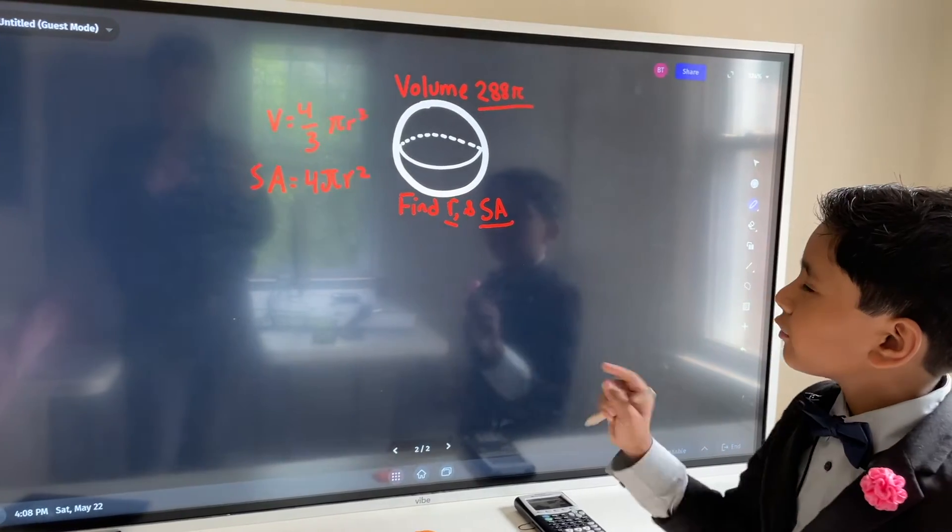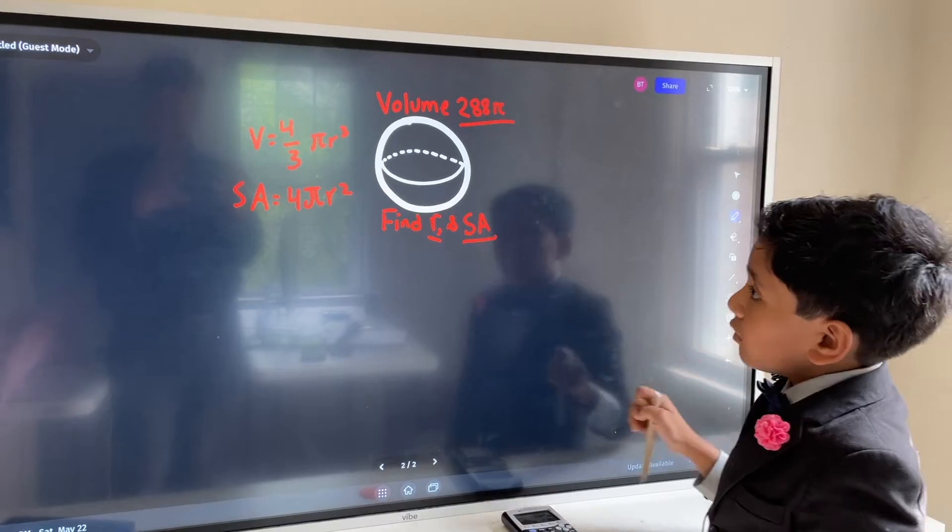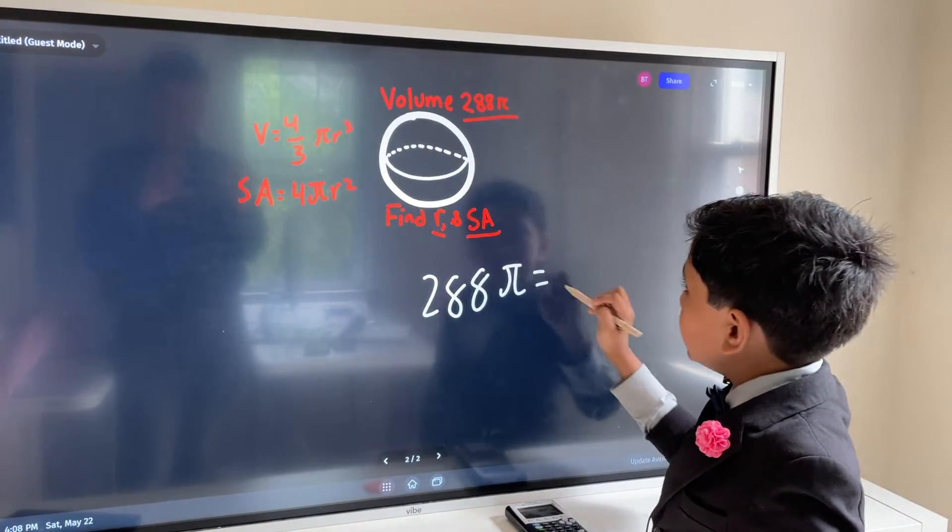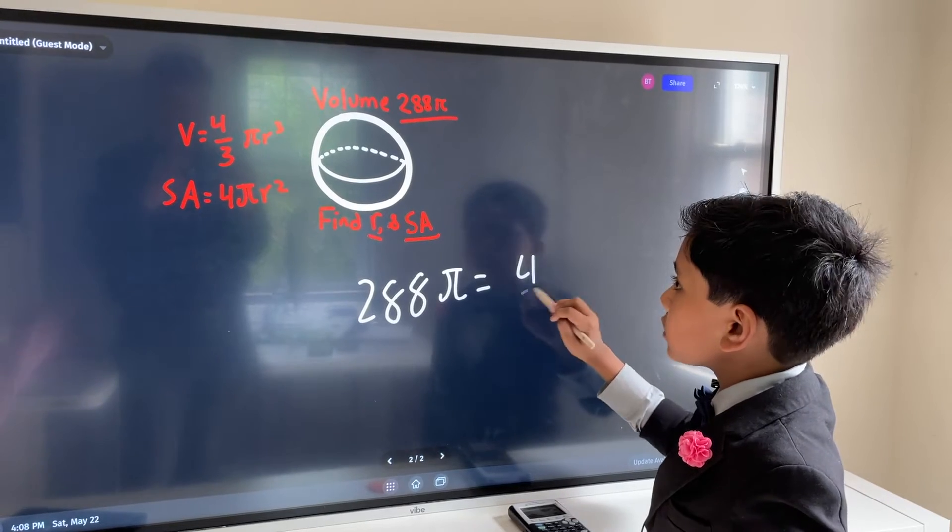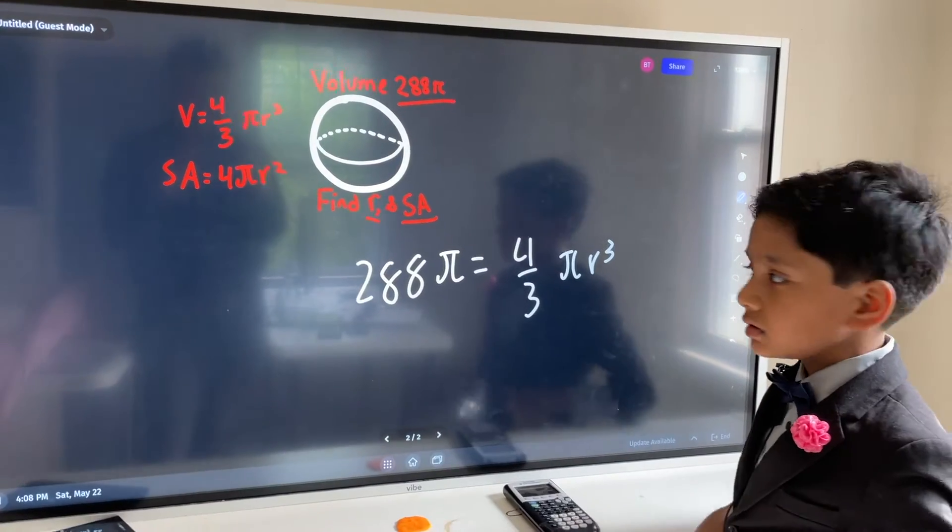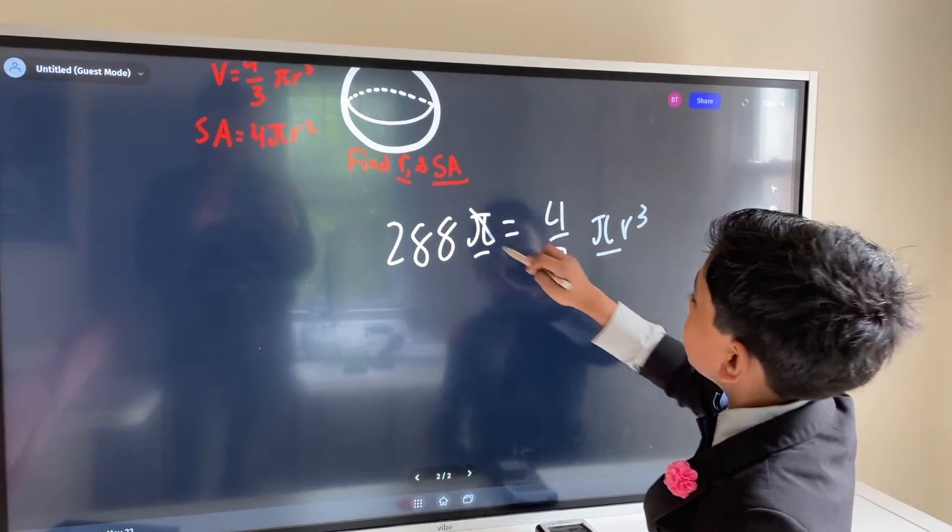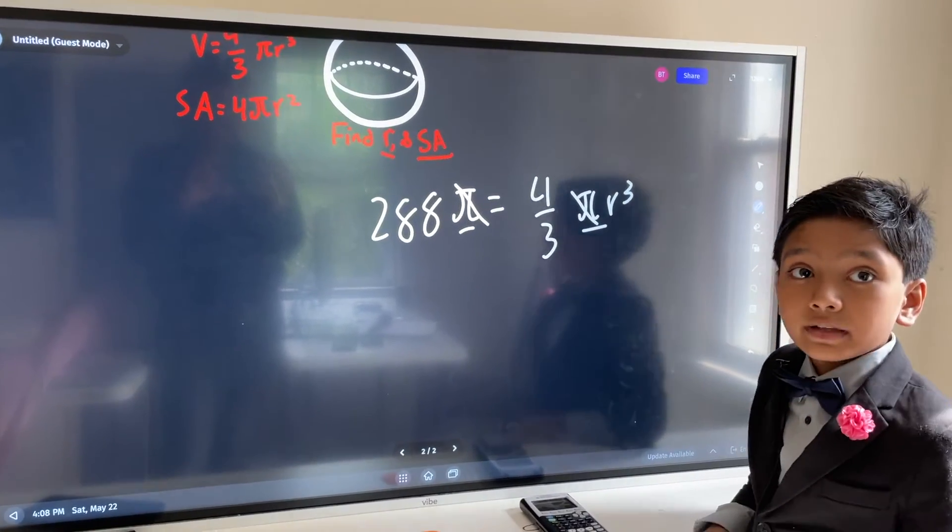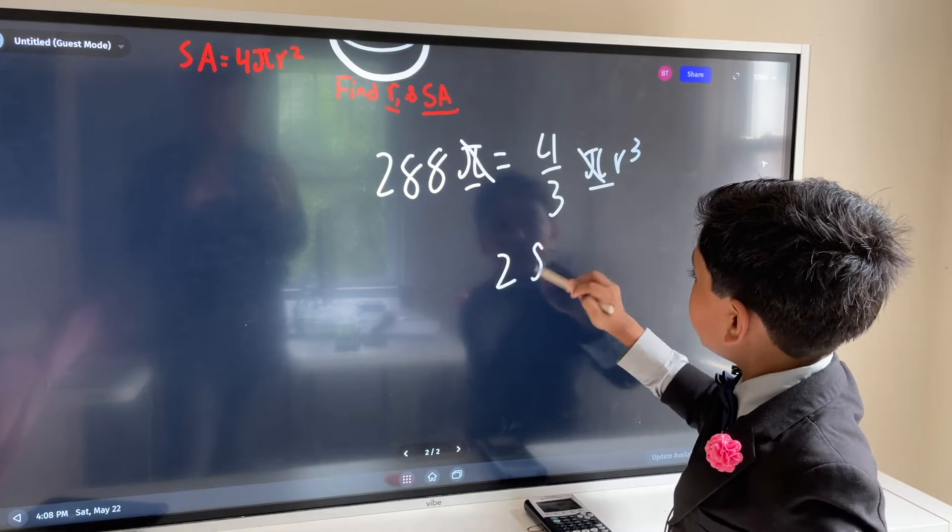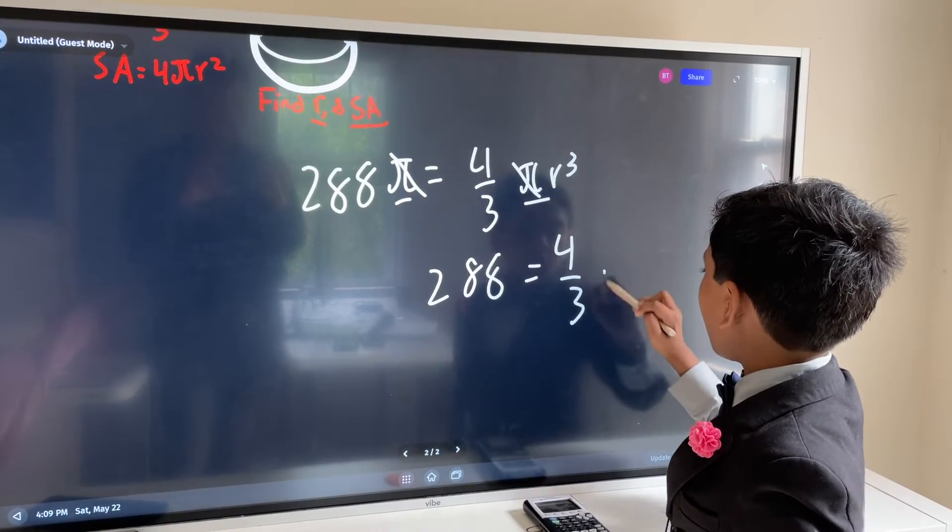The volume is 4 thirds pi r cubed, and we can plug in the volume we know earlier to get 288 pi is equal to 4 thirds pi r cubed. So now, we can cancel out these pi's on both sides by dividing both sides by pi, leaving us with 288 is equal to 4 thirds r cubed.